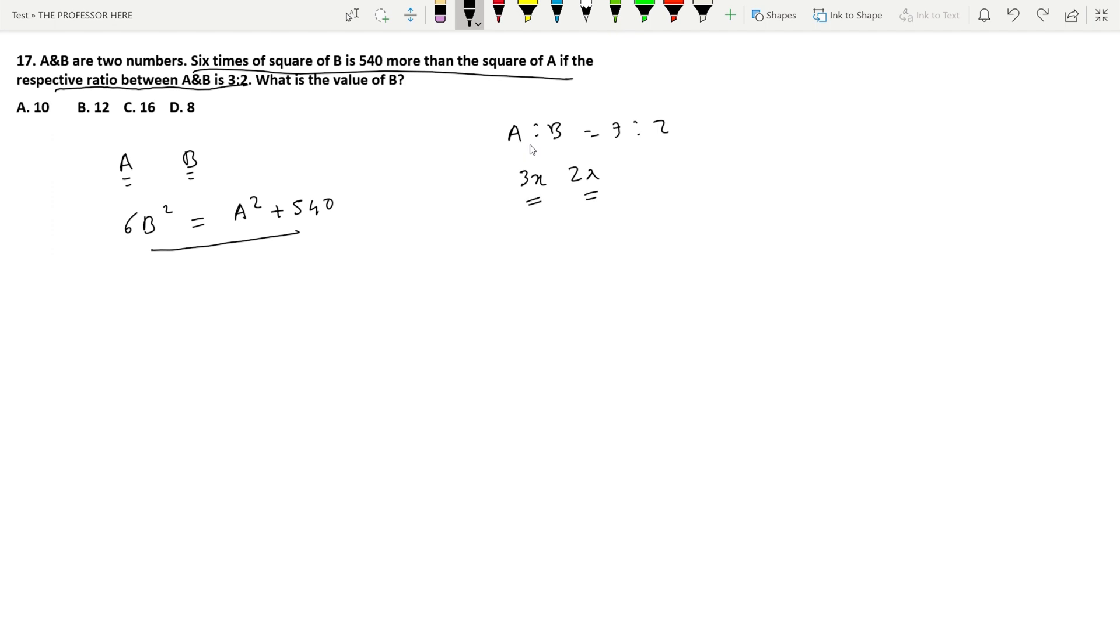Now we substitute the assumed value of a and b in equation number one. So it becomes 6 × (2x)² = (3x)² + 540. That becomes 6 × 4x² = 9x² + 540, so 24x² - 9x² = 540.